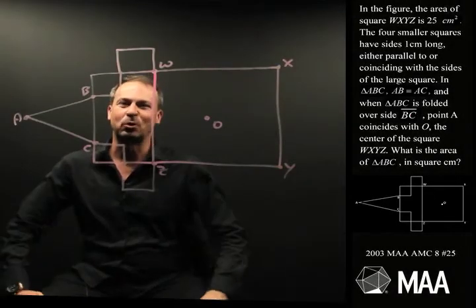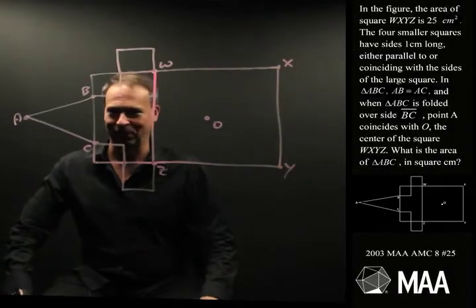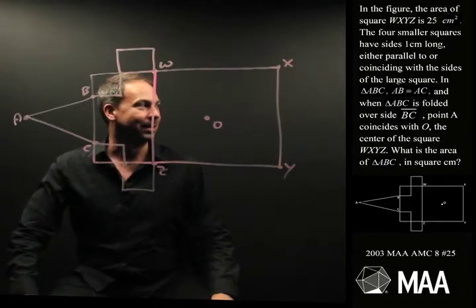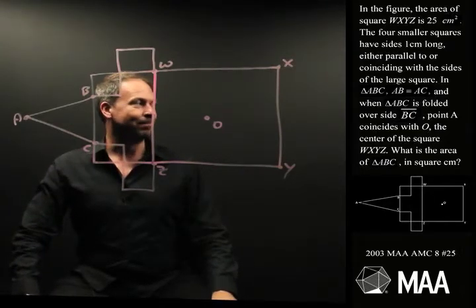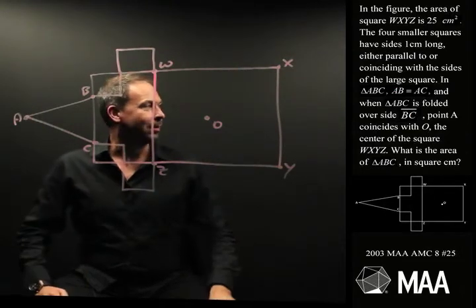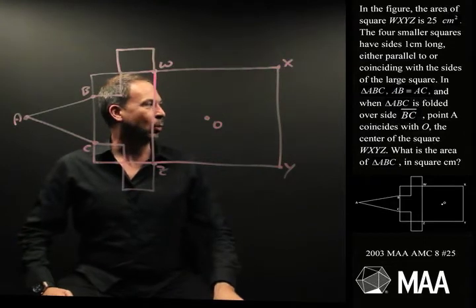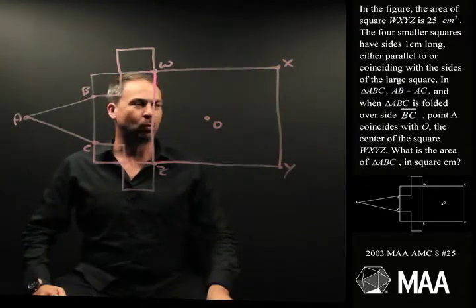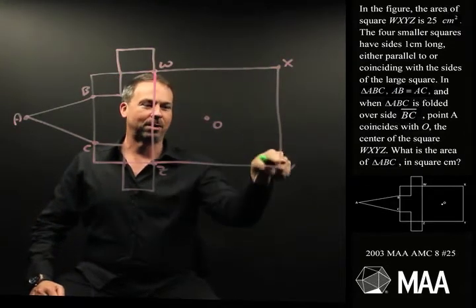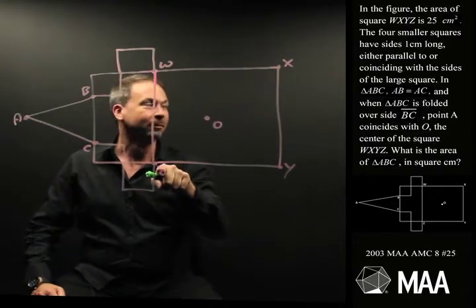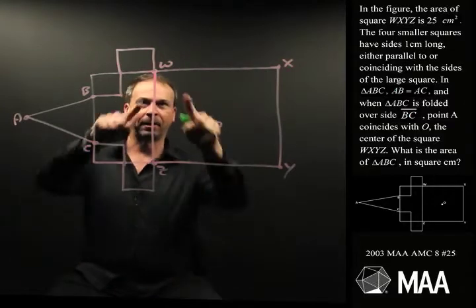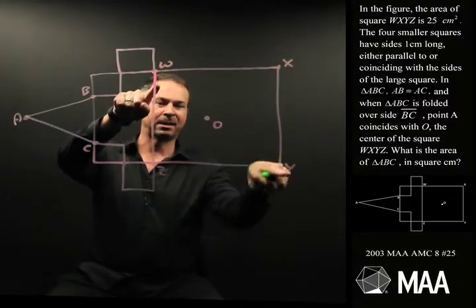G'day. Here's a geometry problem for middle schoolers. It goes as follows. In the figure — this very complicated figure — the area of square WXYZ is 25cm squared.